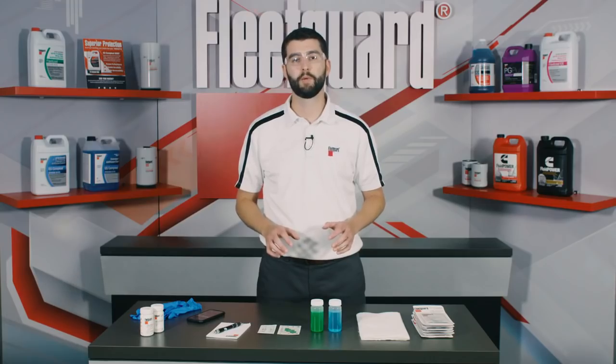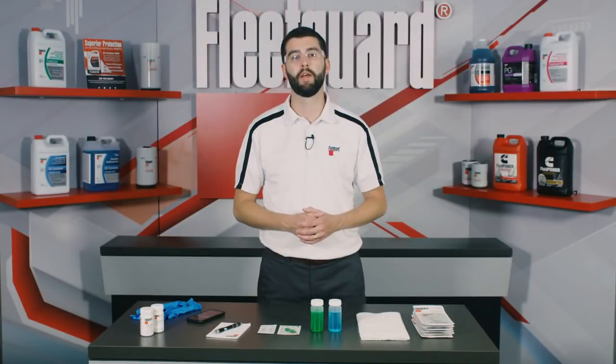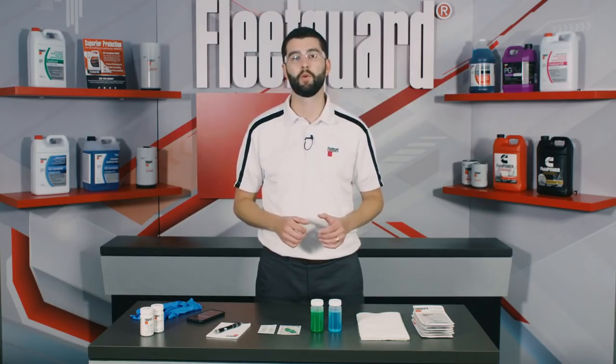FleetGuard three-way test strips measure the percent glycol and freeze point of the coolant first, then the molybdate content and lastly the concentration of nitrite. The results of the nitrite and molybdate readings will then be combined to provide the estimated SCA or supplemental coolant additives units per gallon remaining in the coolant.